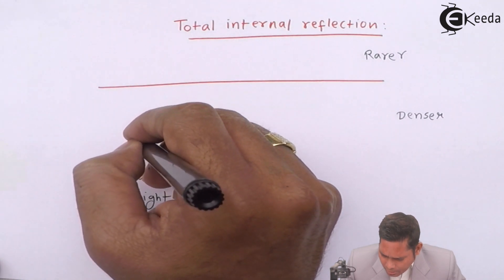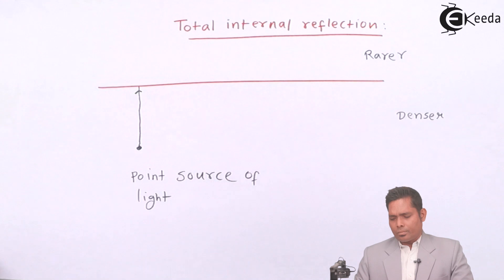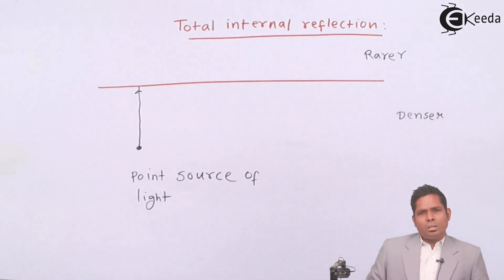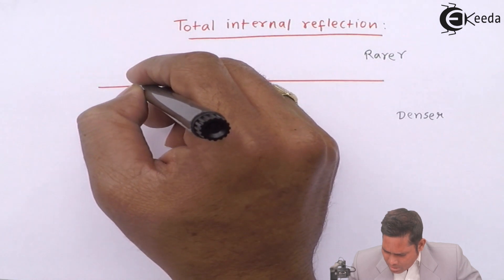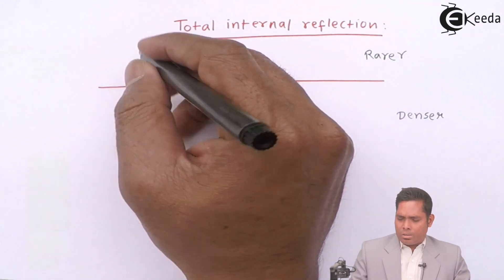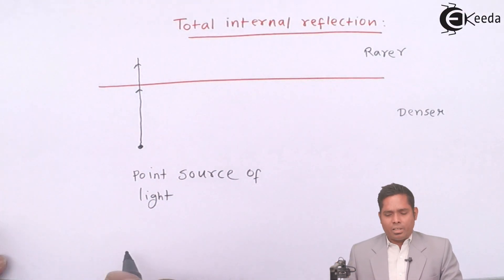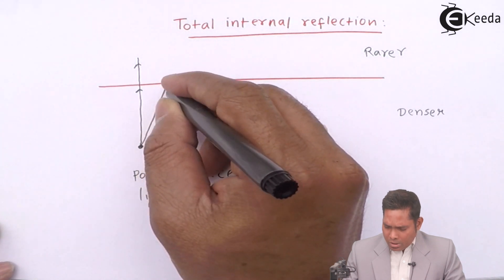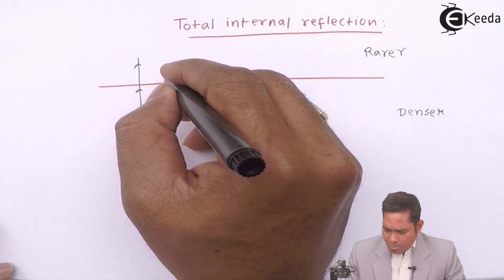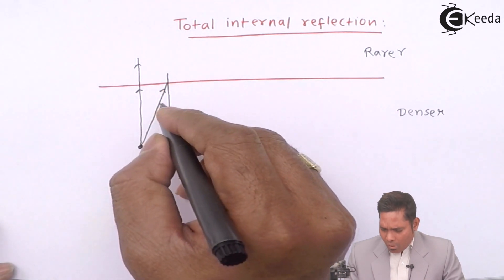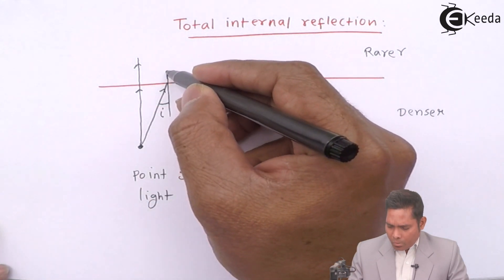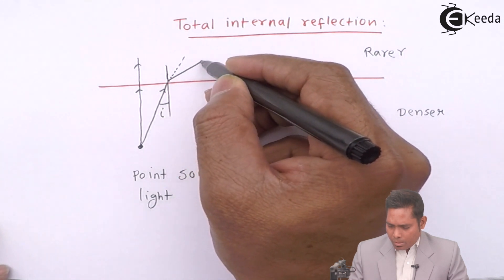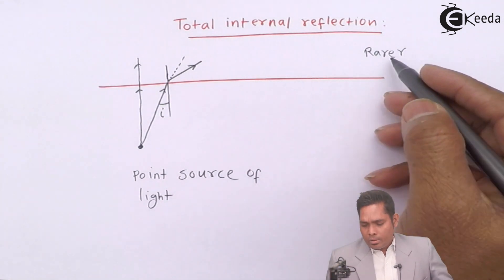Consider this ray. I am considering only the refracted part. This is the incident ray, and because this is along the normal, it goes undeviated — straight to the other side without any deviation. This other ray strikes the interface at a certain angle of incidence, say I. It should have gone straight, but it bends away from the normal, and this is how it comes out in the rarer medium.